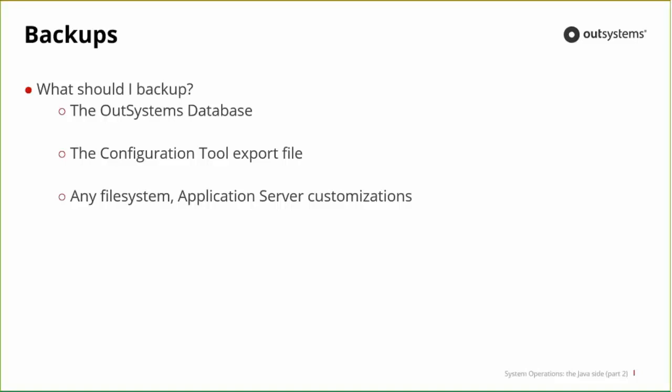What we advise is to also backup the configuration file — the server.hsconf file that the configuration tool saves, which already has all the configurations. Note that passwords are in the private.key file. Any file system customizations — like JBoss memory tuning files — should also be backed up. If something happens, you already have the fine-tuning that took so long to get. If you're using virtualization, you can just backup the full server — it takes more space but covers everything.